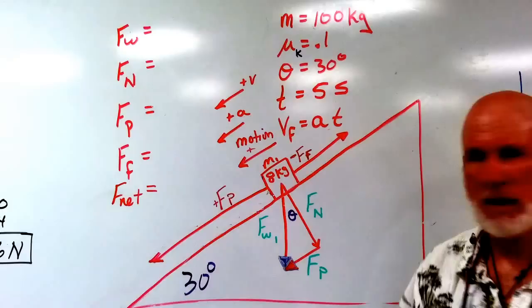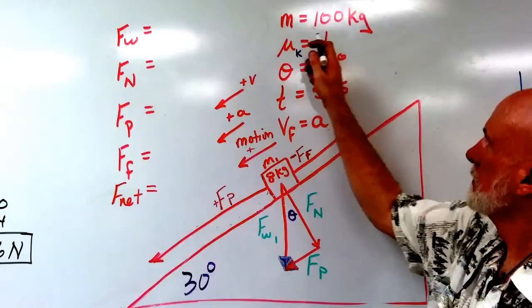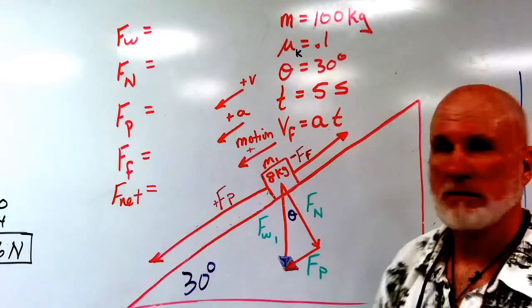I have a skier. A skier, a 100 kilogram skier. The coefficient of friction is 0.1. 30 degree mountain.